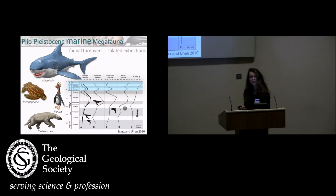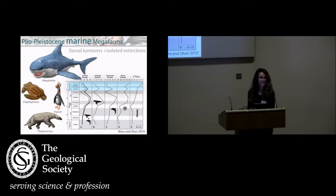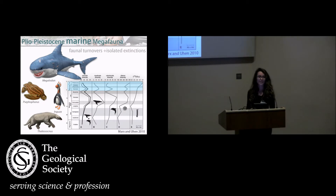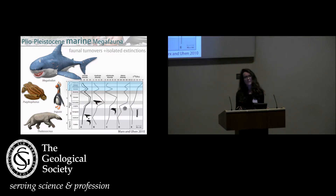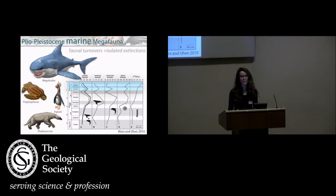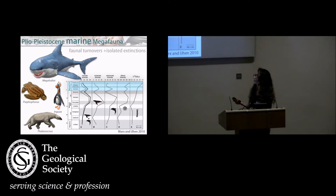However, we know that some marine vertebrates became extinct around that time. We have the case of the biggest shark that ever lived, Megalodon, which I have studied a lot, and also species of sea turtles, marine birds, and mammals. We know there is a very classical case of a drop in diversity of marine mammals around that time.